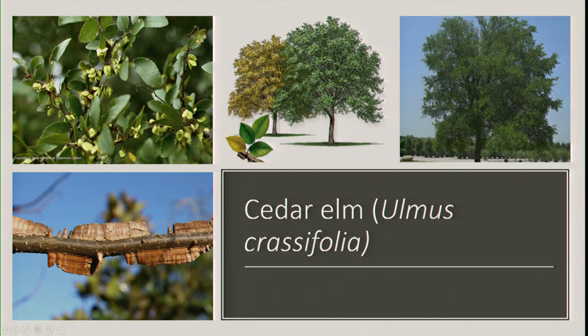Cedar elm — the fruit I was referring to earlier as nutlets, not samaras. Cedar elms can have corky wings on the branches, but not all cedar elms will — that's a mutation. Winged elms always have the corky bark. The way to tell them apart comes down to the leaf: a cedar elm has a scabrous leaf — sandpapery — when you rub it backwards. A winged elm is smooth. So if it has wings and is sandpapery, it's cedar elm; if it has wings and is smooth, it's winged elm.